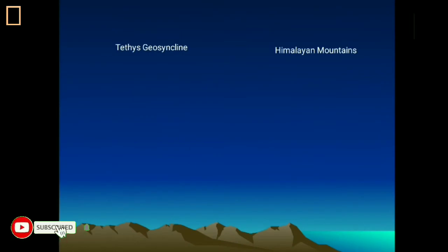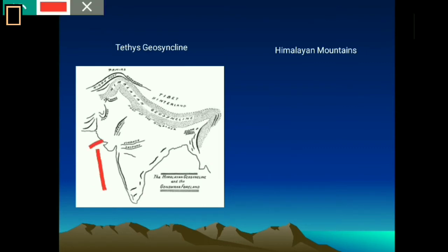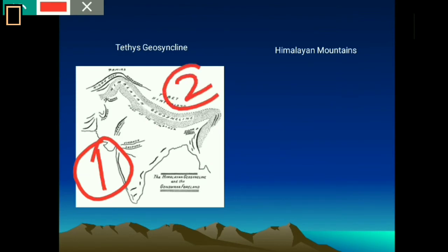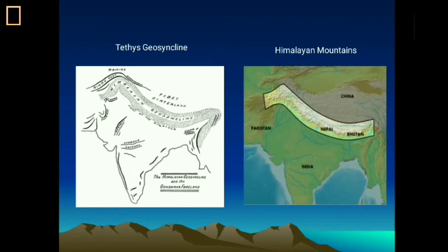There is also a pictorial representation of the geosyncline. In the first diagram, you can see the Tethys geosyncline and the positions of the two landmasses: the first is known as Gondwana land and the other is Angara land. Coming to the Himalayan mountains that formed from the Tethys geosyncline, in today's representation, Nepal and China correspond to the Angara land, and India corresponds to the Gondwana land.